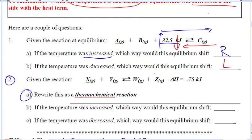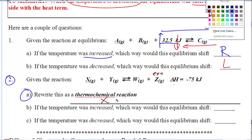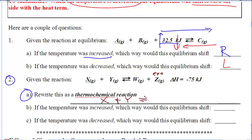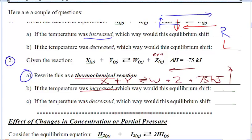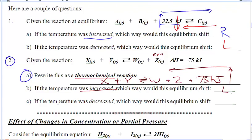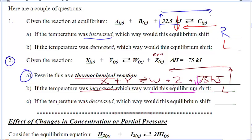This next example is exothermic. The heat term will be on the product side. If I increase the temperature, it's going to shift away from that heat to bring it back down to the way it was, so it's going to shift to the left. If I decrease the temperature, it's going to shift toward the heat to warm itself back up. It's going to undo whatever I do — whether I'm talking about concentration, temperature, volume, or pressure.